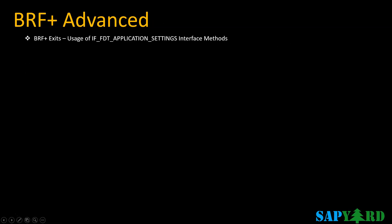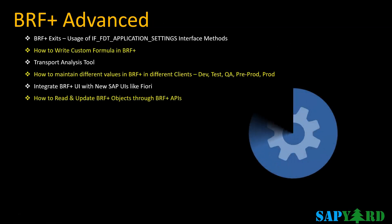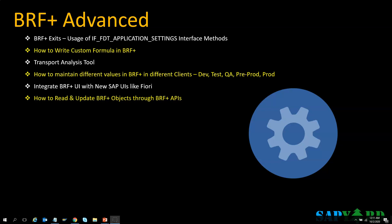One size never fits all, just like standard SAP processes can never be useful for all client business needs. Therefore, SAP provides user exits, customer exits, BAdIs, enhancement points, etc. to all customers to tweak the system as per their unique business needs. Similarly, SAP has provided BRF Plus application exits. These are programmatic enhancements that are executed at specific events for a specific purpose. BRF Plus exits are technically based on an ABAP class that implements the special interface IF_FDT_APPLICATION_SETTINGS. They are typically used and valid only within the scope of a single BRF Plus application. These are advanced topics which we will not shy away from teaching to participants.